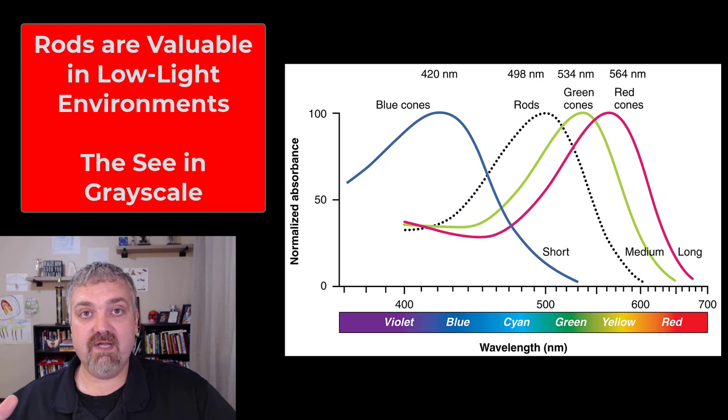Rods do not register these different colors, but they're very sensitive to vision in low light. Your rods are really good in low light at showing you the world in grayscale. You can still see diffuse edges and movement, but you're not going to see much fine detail.